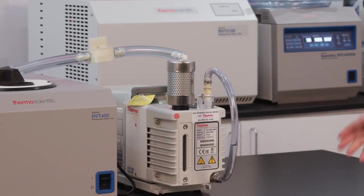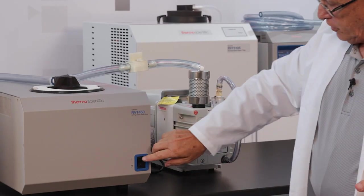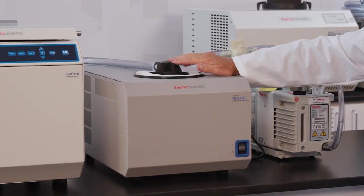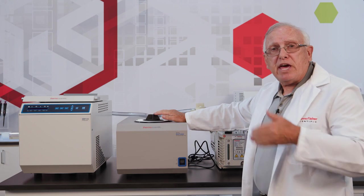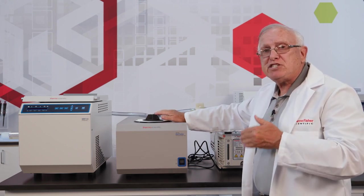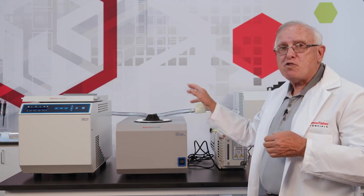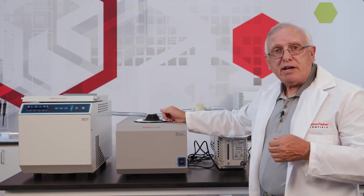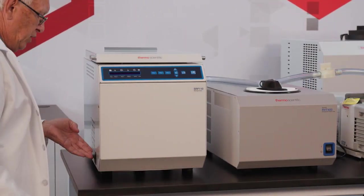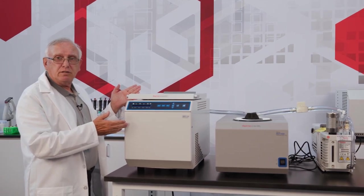Once you plug these all into the outlet, the sequence of operation to turn them on is the pump comes on first. The switch is here. You turn on the cold trap. The main switch is here. Please note that once you start your RVT 450, it takes about 45 minutes for it to cool down to its operating temperature of minus 50C. So you have to wait at least 45 minutes before you actually start a run within the SRF 110. Now we come over to the SRF 110. We hit the main switch on that. And that now turns on.